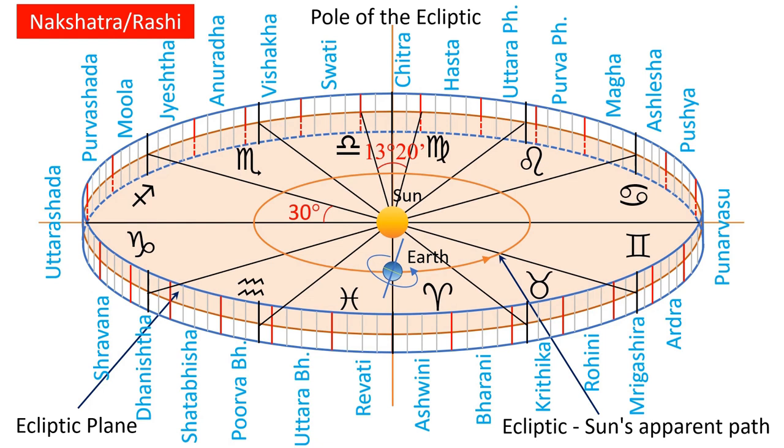In Vedic astrology, the starting point of the zodiac that is the zero degrees of sign Aries or rashi Mesha is always fixed with reference to a fixed star and coincides with the starting point of the first constellation of stars or nakshatra called Ashvini.